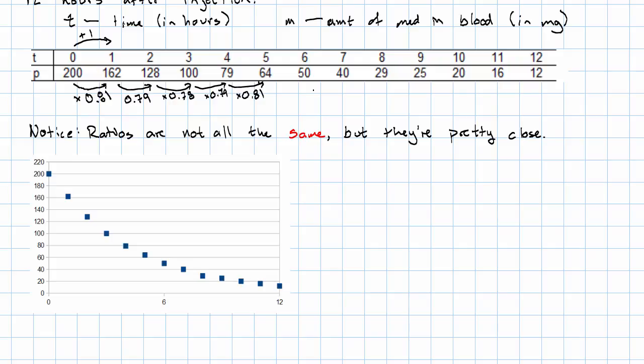Looking at this table, it looks like my multiplier is about 0.8. So it looks like this relationship might be approximately described by the equation - well, P has a starting value of 200, and then we multiply it by 0.8. How many times do we do that? Once every hour.